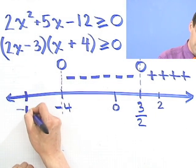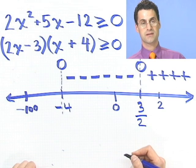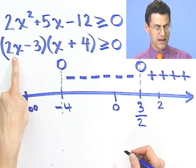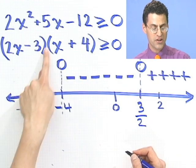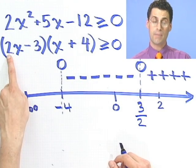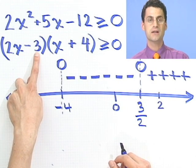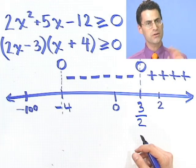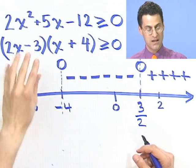All I'm concerned with is just the sign. So if I plug in minus 100 here, will this be positive or negative? Well, let's see. Minus 100 times 2 is minus 200. Minus 200 minus 3 is actually minus 203, but all that matters is minus. See, don't care about the actual value, just the sign. So this is negative here.